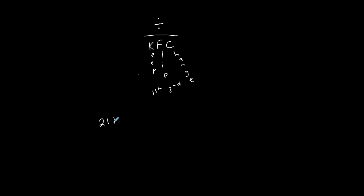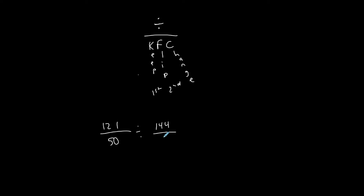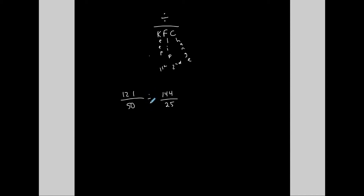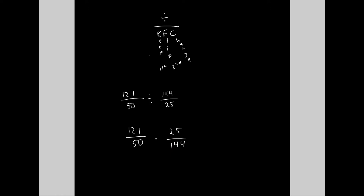Let's do an example: 132 over 50 divided by 144 over 25. I'm dividing two fractions, so here we go — KFC. Keep the first the same, don't change it. Flip the second, also known as the reciprocal — flip it. Then change the division sign to multiplication. And then I'm back to multiplying fractions, which I can pre-simplify.